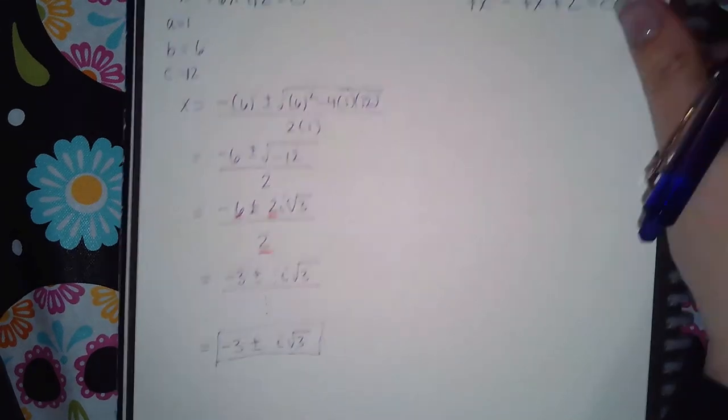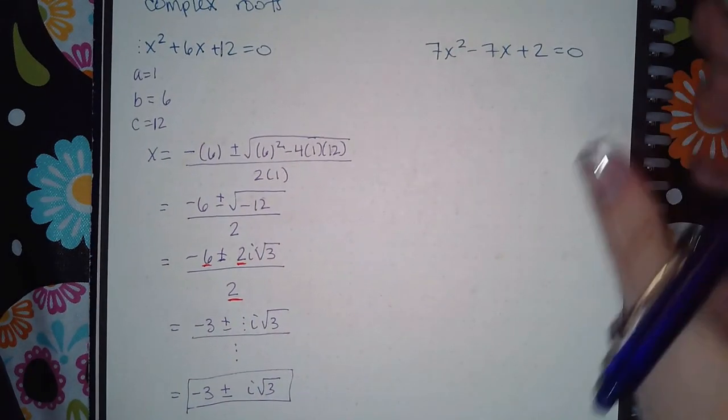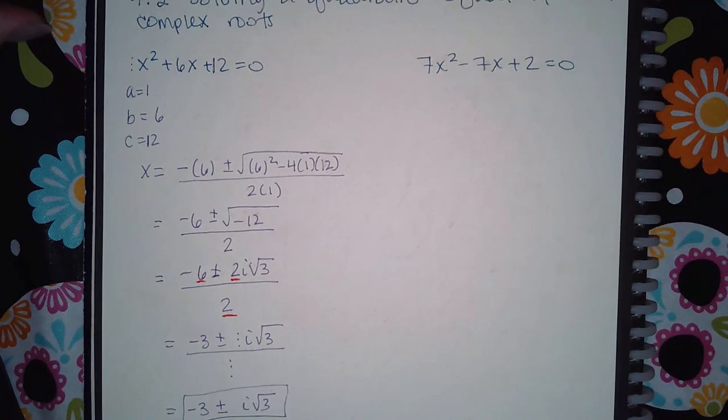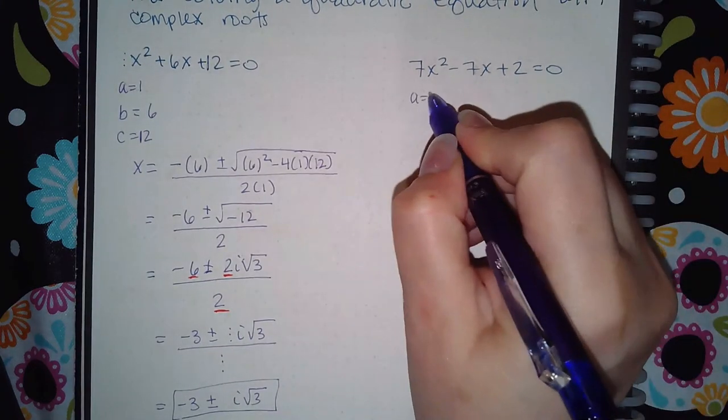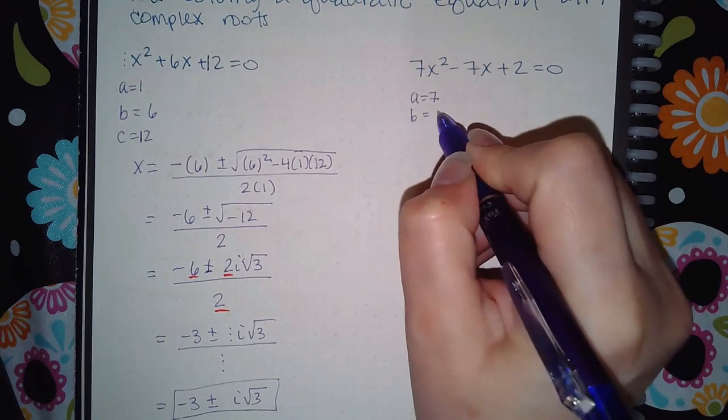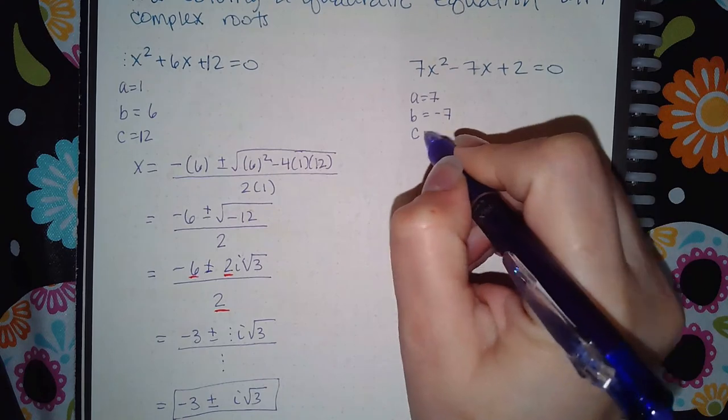Now similarly over here in the other problem, let me try to get it in the camera, there we go. Our a value is a positive 7, our b is a negative 7, and our c is a 2.